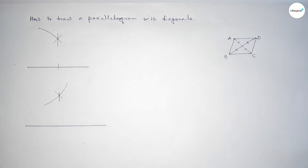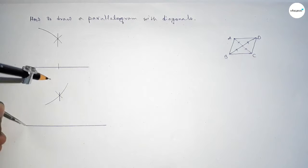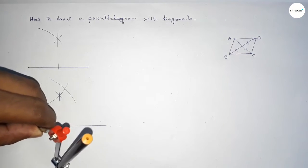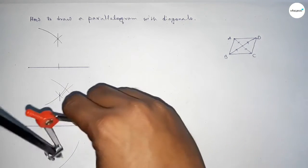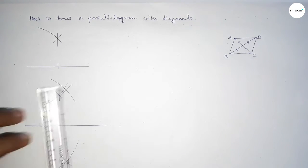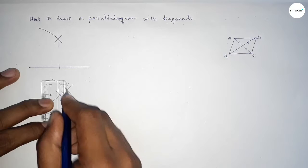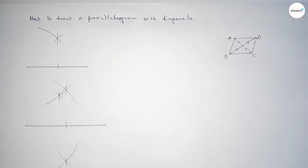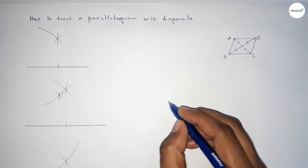Next, again bisecting the second diagonal. Taking greater than half of this and drawing an arc with the same length, cutting here and here. Now joining the bisector points.